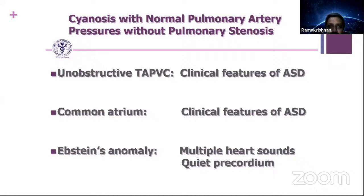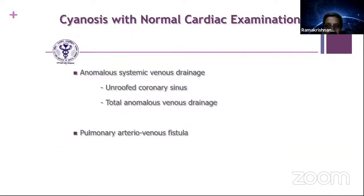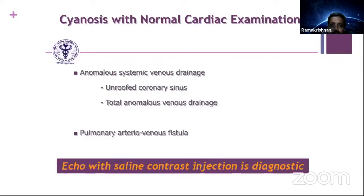Other rare conditions: those with normal pulmonary artery pressure without pulmonary stenosis. Unobstructed TAPVC can have clinical features suggestive of ASD but the patient will be cyanosed. Common atrium will again have ASD-like features but generally with cyanosis at around 85% saturation. Epstein's anomaly will have multiple heart sounds and quiet precordium. Cyanosis with normal cardiac examination: think anomalous systemic venous drainage, unroofed coronary sinus, total or partial anomalous systemic venous drainage, or pulmonary AV fistula. Echo with saline contrast injection is diagnostic.